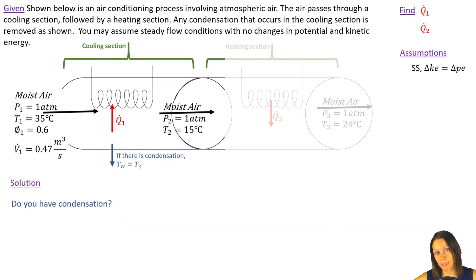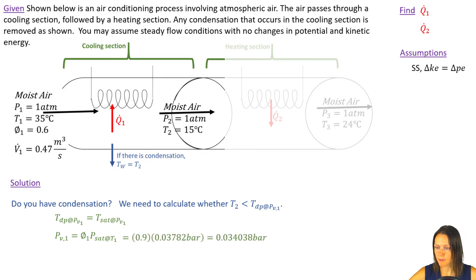First things first, let's figure out if we have condensation. What that means is I'm going to have to calculate what the dew point temperature is to see if T2 is less than that dew point temperature. The dew point temperature at the partial pressure of the water vapor at state one is just TSAT at PV1. I've got T1, so I can look at the saturation pressure, and I've got my relative humidity, so I can do the calculation to get that PV at state one. I can go back to my saturated water tables and figure out what the saturation temperature is at PV1, at 0.034038 bar, and that's 26.2 degrees Celsius.